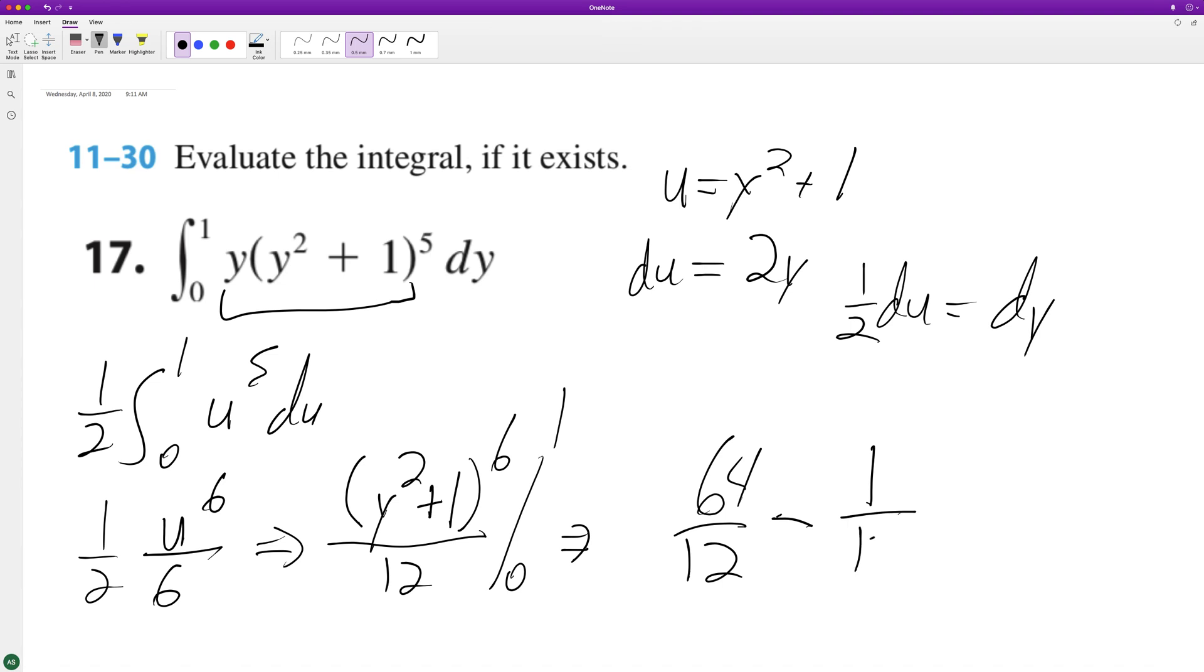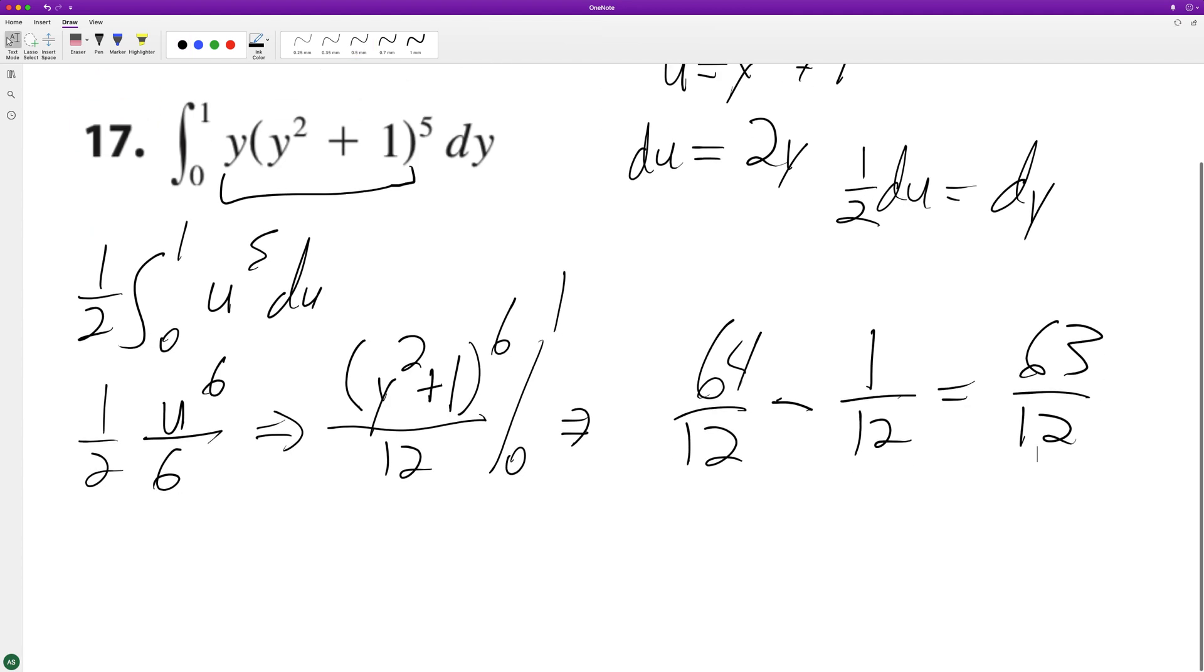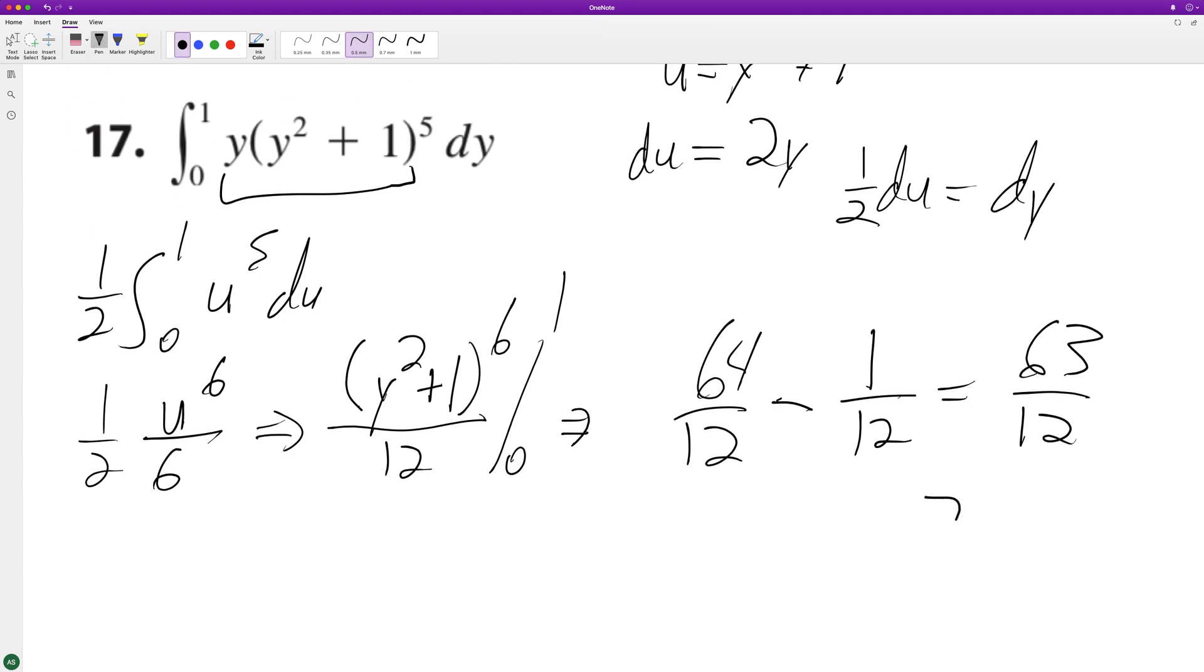So this is equal to sixty three over twelve. Each of these is divisible by three: sixty three becomes twenty one, twelve becomes four, and that's it.